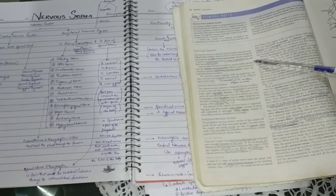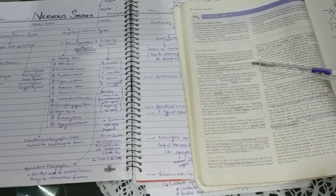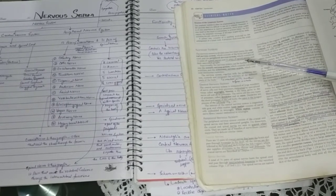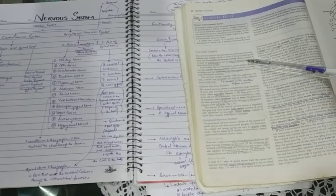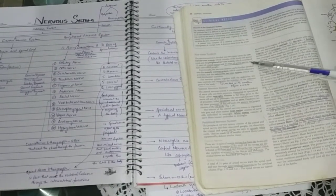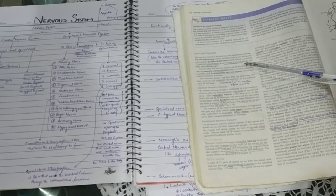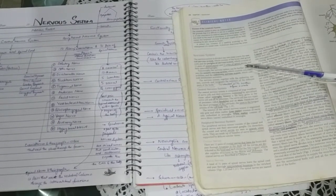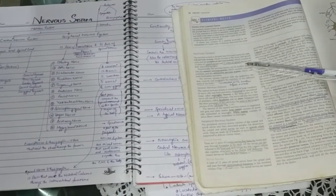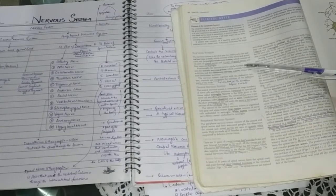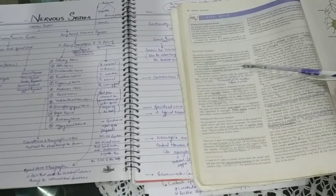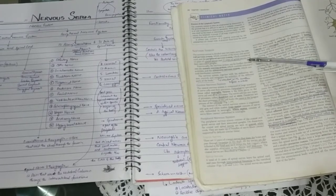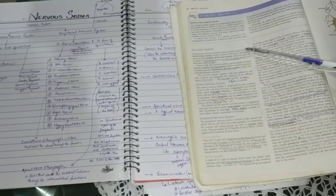The central nervous system is made up of the brain and spinal cord. The peripheral nervous system consists of 12 pairs of cranial nerves and 31 pairs of spinal nerves and their associated ganglia. The central nervous system has the brain and spinal cord, and the peripheral nervous system has spinal nerves and cranial nerves, with associated ganglia providing the support system.